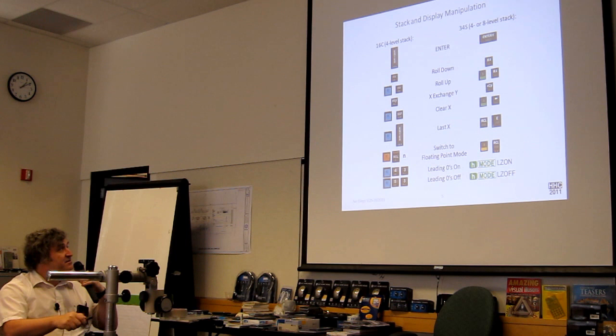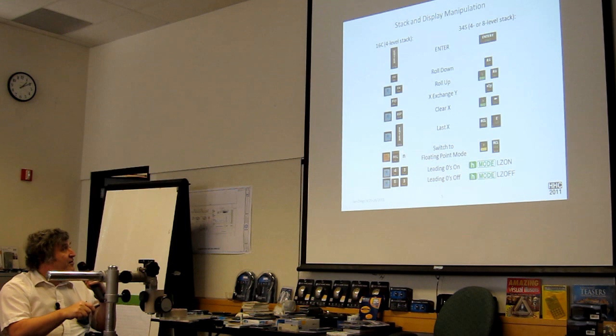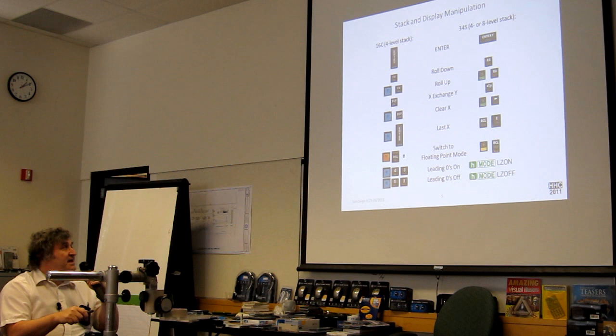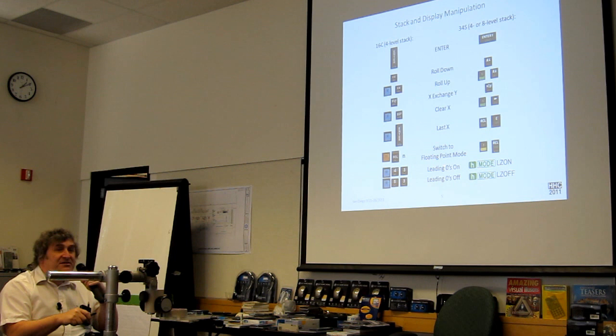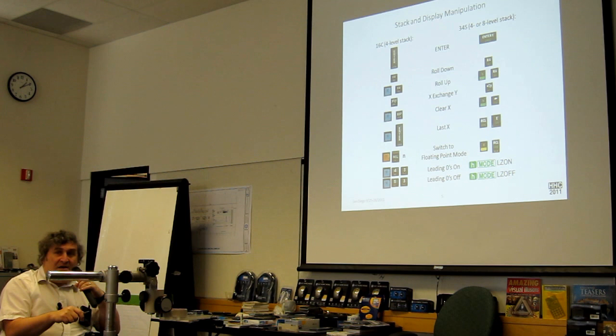Let's just go through some of the functionality and line them up side by side. On the 16C with the four-level stack, you've got your typical enter or roll down, roll up, which is G shifted. On the 34, roll up is H shifted. X exchange Y, clear X, last X. And in the 34S, it was argued at one point, why isn't there a last X function? And the answer was, well, since last X could only fit on a shifted key plane and would take two shifts, it's essentially recall L. So they just took it off the keyboard and said, just press recall L. So you could, last X does that.